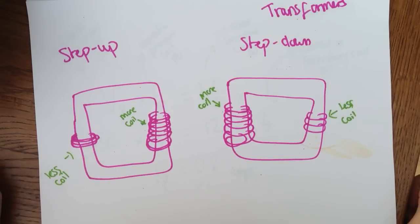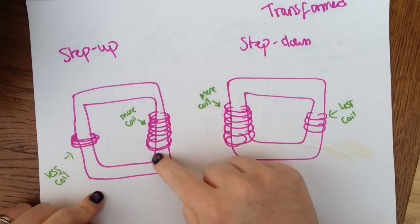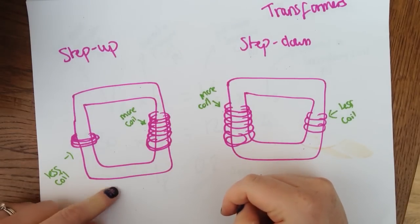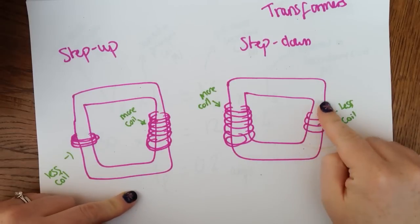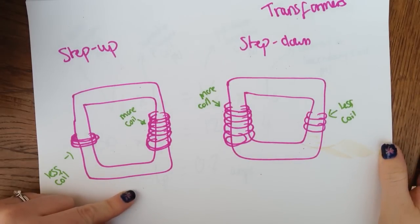Two different types of transformers we can have are step-up and step-down transformers. So a step-up transformer is going to have more coils on the secondary coil, and a step-down is going to have less coils on the secondary coil.